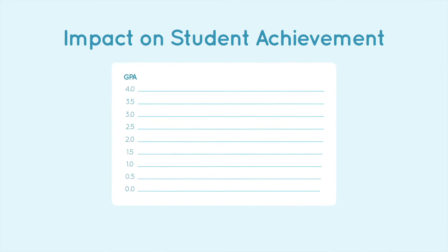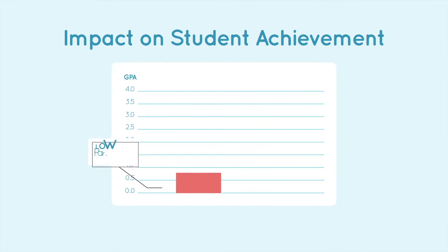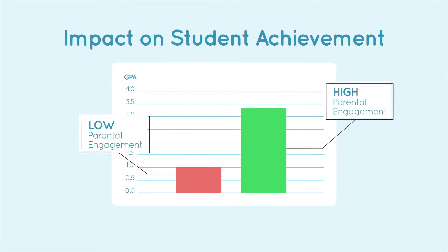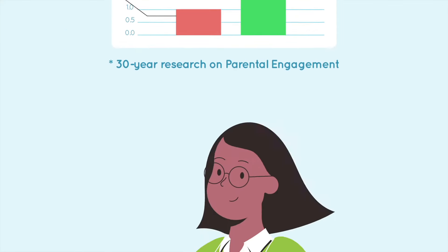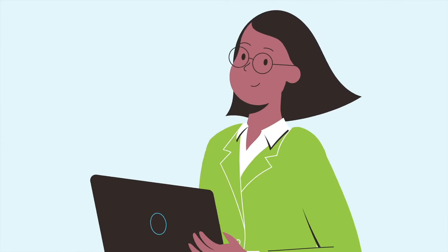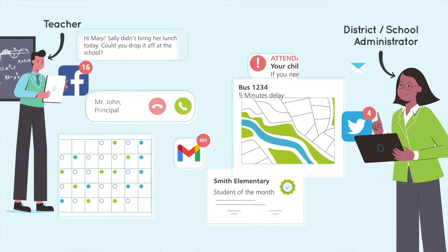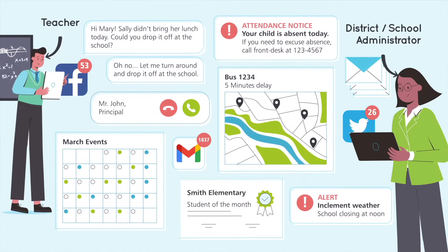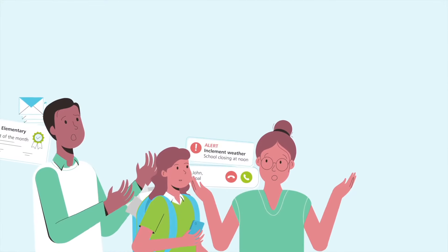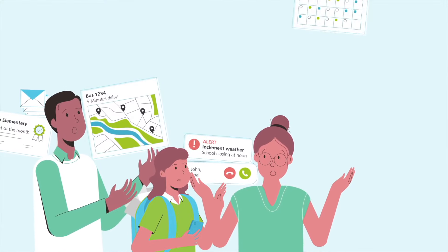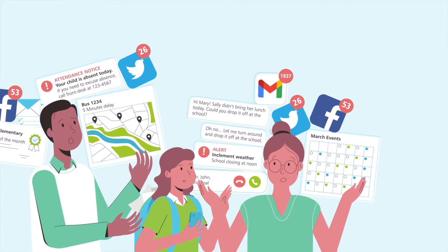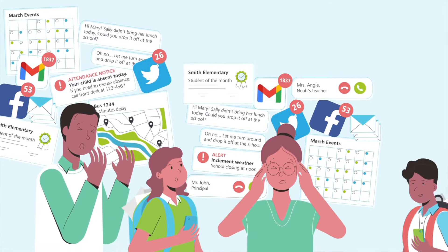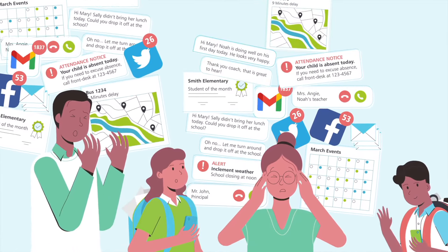Years of research has clearly demonstrated parental engagement is the number one factor for student success. Sounds simple, but in reality, until today, school and district administrators have depended on too many tools to communicate with their families. As a result, parents often miss communication with too many places to navigate, leading to disengagement and frustration. And the frustration is amplified for families with multiple children.